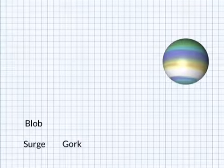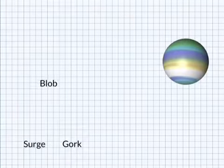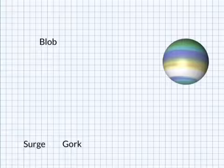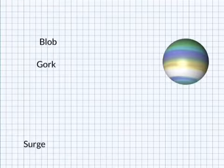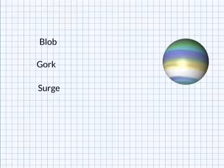So, we're going to do some algebra. We've got three aliens: Blob, Gork, and Surge, and they're all experts at jumping up in the air.